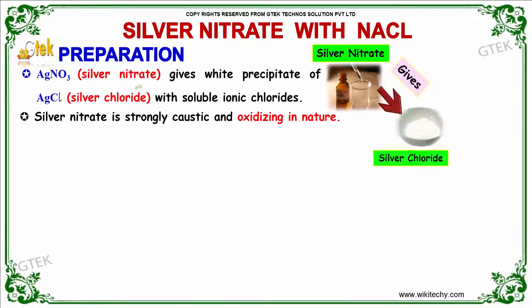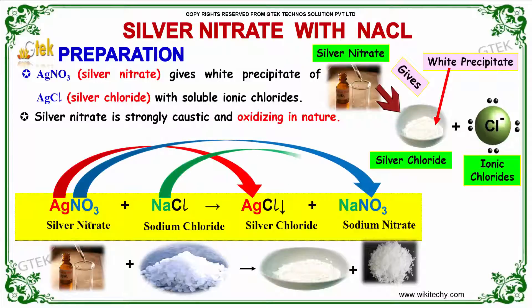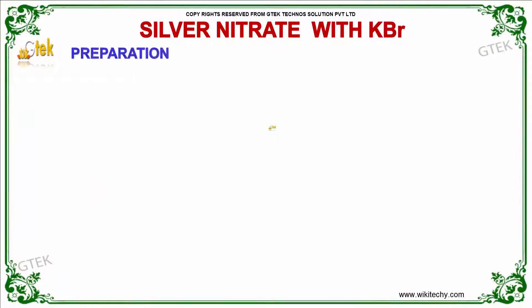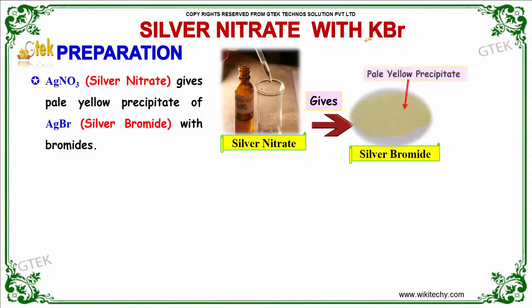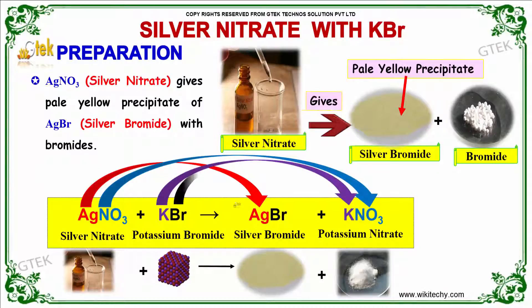Silver nitrate gives a white precipitate of silver chloride with soluble ionic chlorides. Silver nitrate with sodium chloride gives silver chloride and sodium nitrate. It is strongly caustic and oxidizing in nature. Silver nitrate with potassium bromide gives a pale yellow precipitate of silver bromide and potassium nitrate.